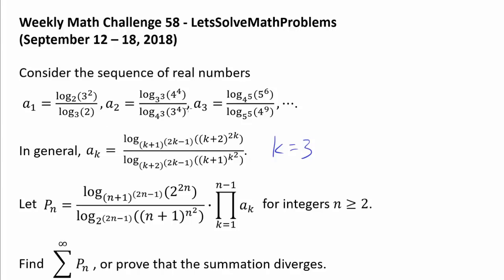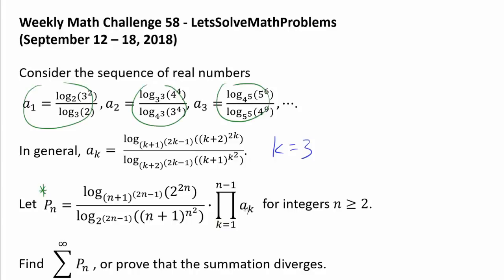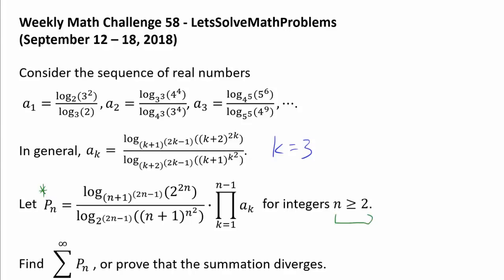Once we acquaint ourselves with the pattern, we have to worry about p sub n. Let p sub n be log base (n+1) to the (2n−1) power of 2 to the 2n power, over log base 2 to the (2n−1) power of (n+1) to the n-squared power, times the product from k equals 1 to n minus 1 of a sub k, for integers n greater than or equal to 2.